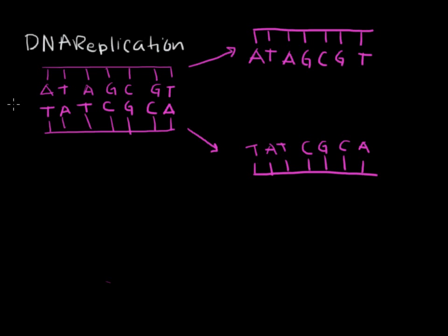The bases bind together with weak hydrogen bonds. So the next question is: what does DNA actually have to do and how does it work? One of the first things DNA has to do is replicate. Each time a cell undergoes division — whether mitosis or meiosis — it first has to replicate its DNA, so it has twice the number of chromosomes.